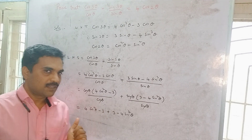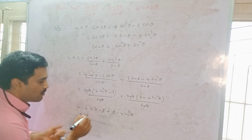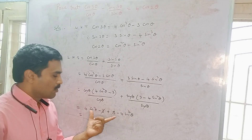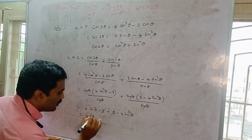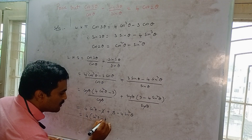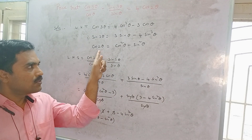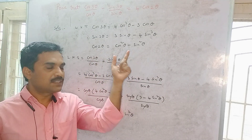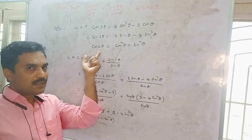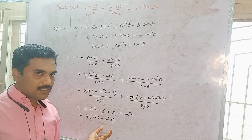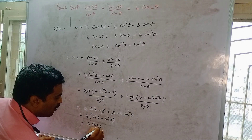Now, −3 + 3 = 0, so those terms cancel. We are left with 4cos²θ − 4sin²θ. Taking 4 as common: 4(cos²θ − sin²θ). Using the third formula, cos²θ − sin²θ = cos 2θ, so this becomes 4cos 2θ, which is the right hand side. The result is proved.